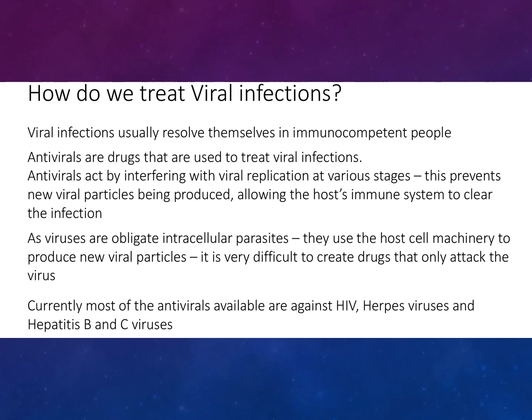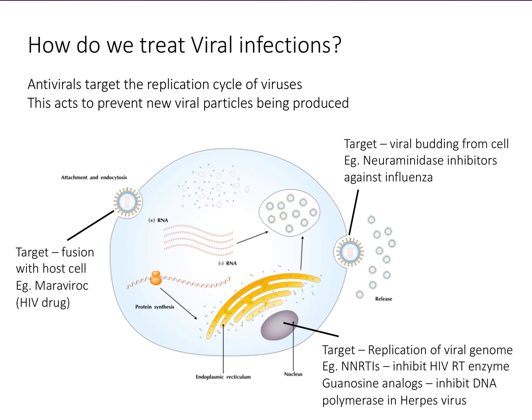It is very difficult to develop drugs that attack only the virus. Currently, most of the antivirals available are against HIV (human immunodeficiency virus), herpes virus, hepatitis B, and hepatitis C. Antivirals target the replication cycle of viruses to prevent new viral particles being produced. The first target involves the host cell membrane — so maraviroc, an HIV drug. Then there are neuraminidase inhibitors against influenza, which target viral exit from the cell. Then there are NNRTIs, which inhibit HIV reverse transcriptase enzyme. And guanosine analogues, which inhibit DNA polymerase in herpes virus, targeting the replication of the viral genome.